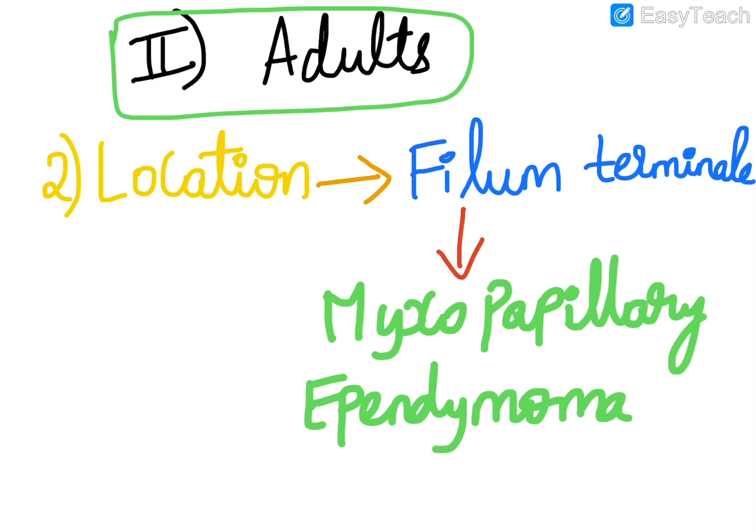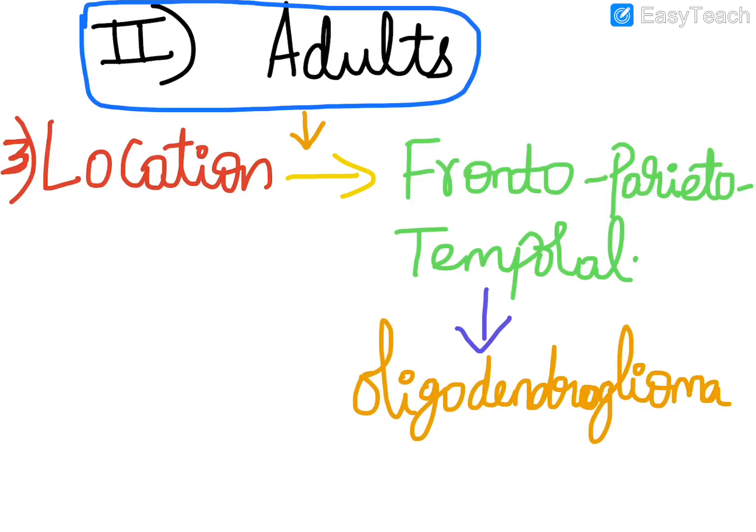Moving on to the second location in the adult age group, that is the filum terminale. The most common CNS tumor to arise in the adult age group at the filum terminale is myxopapillary ependymoma.